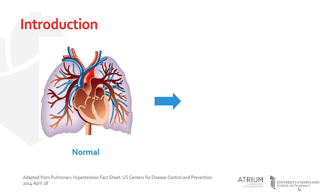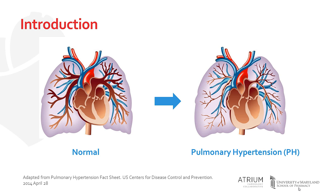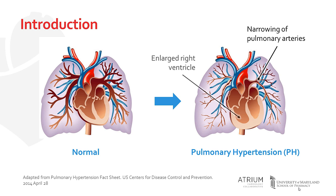To begin, pulmonary hypertension, or PH, is a clinical syndrome characterized by narrowing of the pulmonary arteries. If left untreated, the increased pressure that often results can produce enlargement of the right ventricle, and in many cases, right ventricular failure.